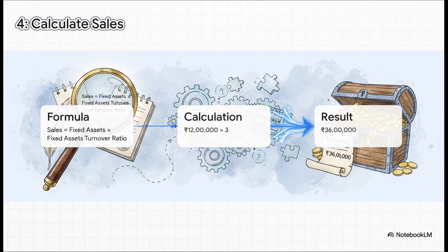Let's build a bridge now from the balance sheet over to the income statement. We're going back to our fixed assets anchor. The turnover ratio is 3. What does that mean? It's a measure of efficiency. It means for every 1 rupee of fixed assets, the company generates 3 rupees in sales. So, 12 lakhs times 3 gives us a total sales figure of 36 lakh rupees.